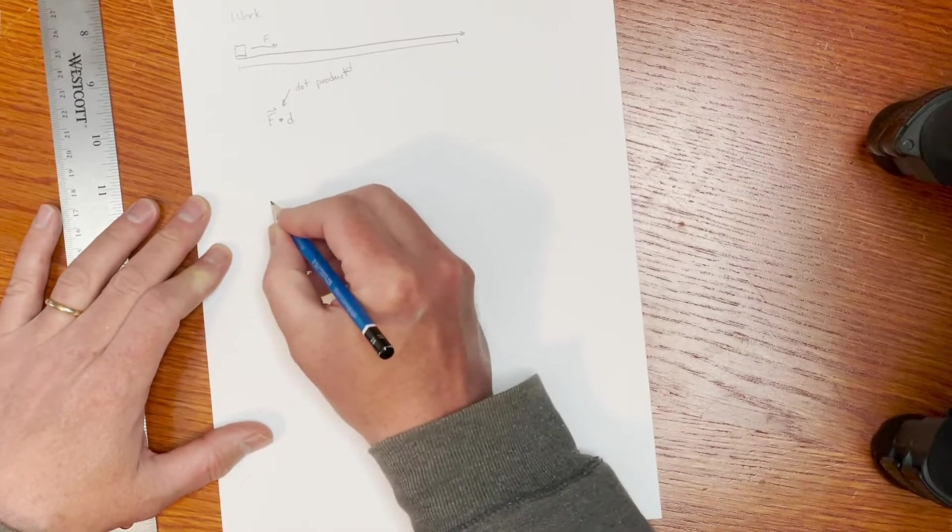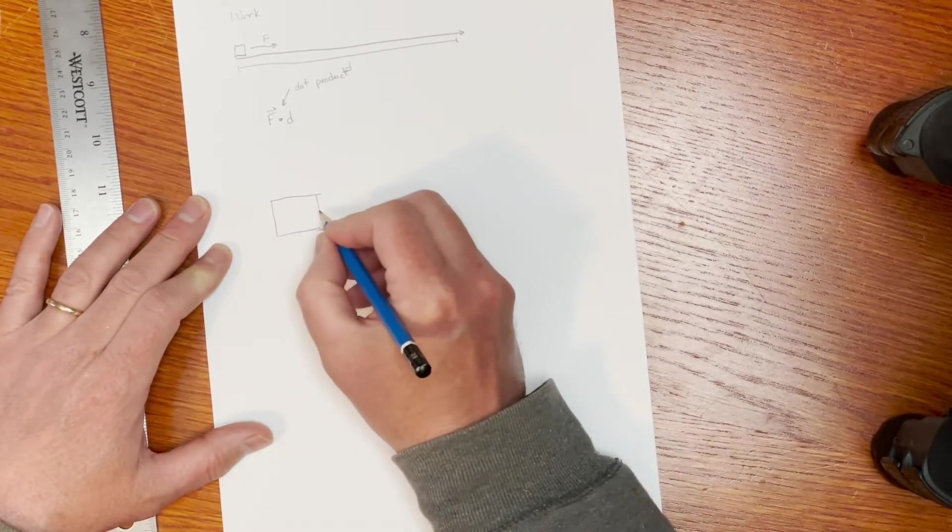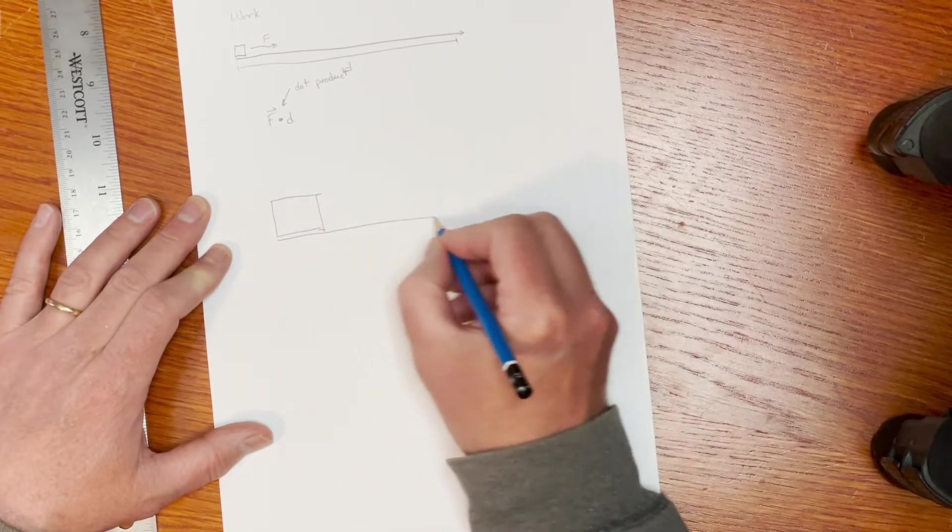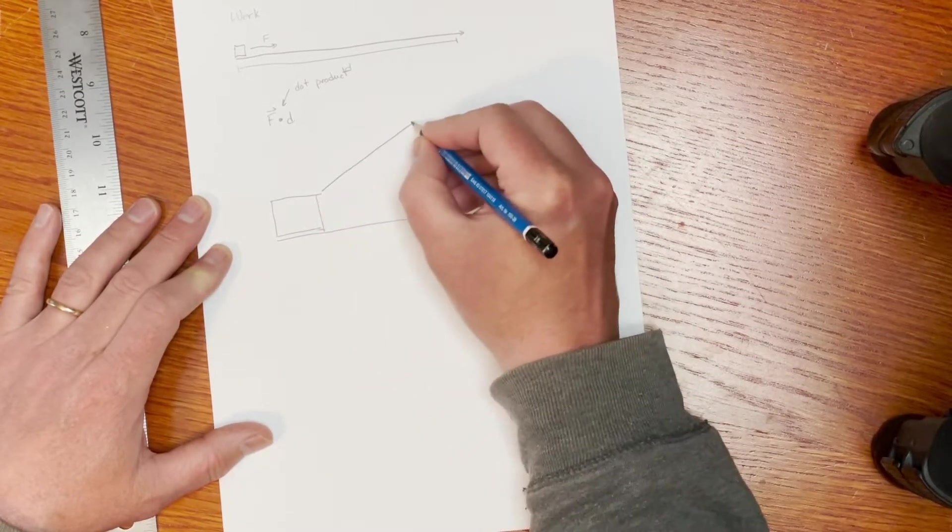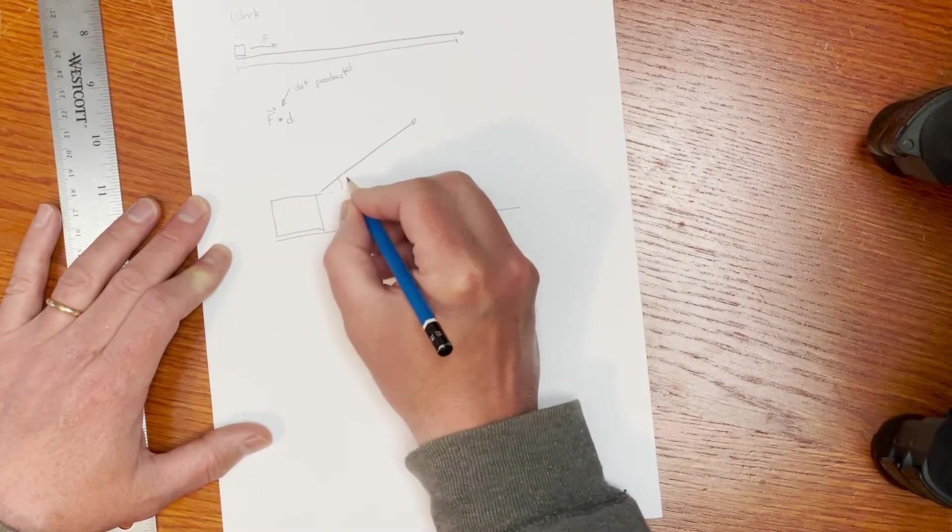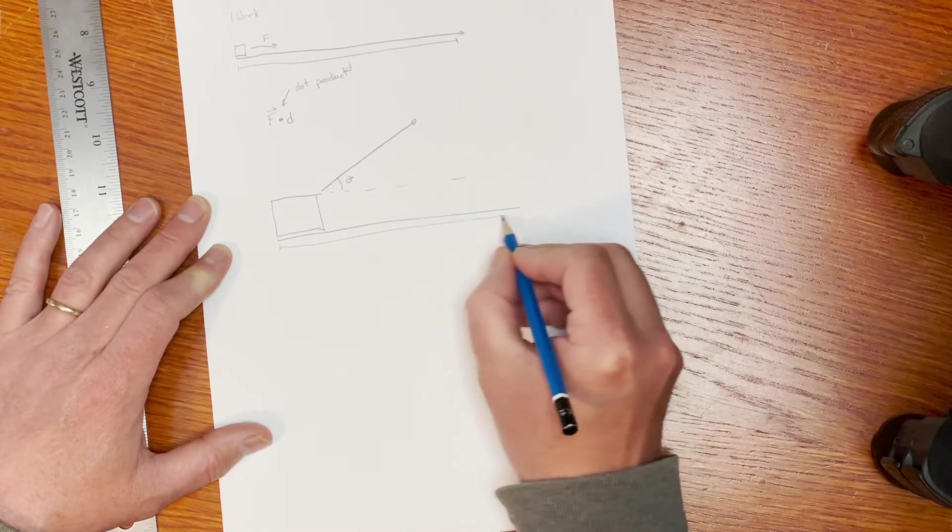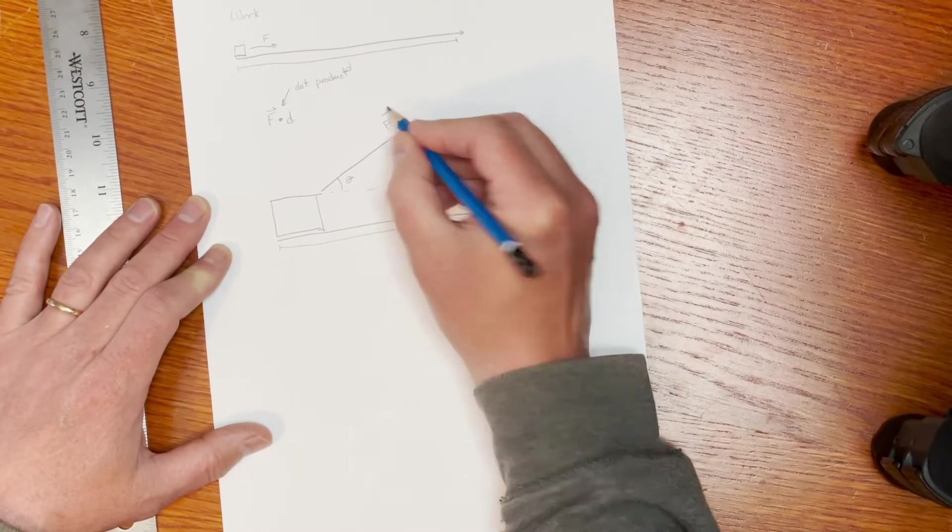For example, if I have that same object, and instead of pushing it horizontally across like that, I pull up in that direction. Well, that's at an angle between the distance that's being pulled and the force that's being applied.